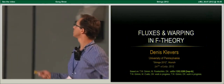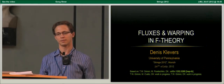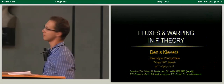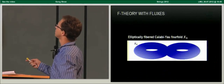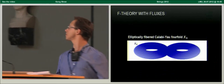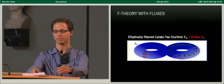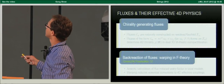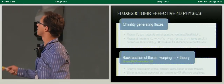Today I will talk about work in collaboration with Thomas Grimm and Maximilian Poreczkin, as well as work in progress with Thomas and Miriam Swetich. The setups I'm going to consider are compactifications of F-theory on elliptically fibered singular Calabi-Yau four-folds in the presence of background G4 fluxes, and I will discuss two aspects of the four-dimensional effective physics of these fluxes.